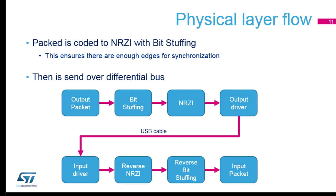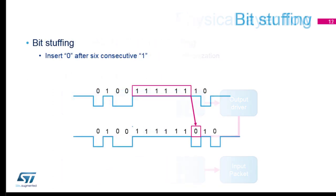USB is differential, meaning we have two data pins: D+ and D−, which are always opposite — when one is high the other is low. Bit stuffing inserts a zero after six consecutive ones. If you put an oscilloscope on the line, what you see is this encoded signal which needs to be decoded — quite complicated.